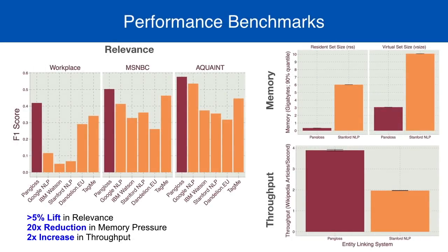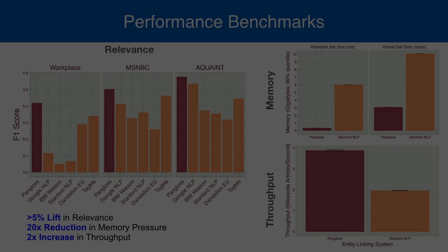Pangloss exhibits best-of-class performance on three entity linking benchmarks, showing an 8.6% improvement for MSNBC, a 7.6% increase for Acquaint, and a 15.4% improvement on workplace conversations. Compared to Stanford CoreNLP, it has twice the entity linking throughput at an order of magnitude reduction in memory pressure.